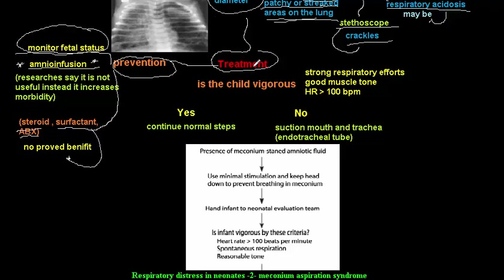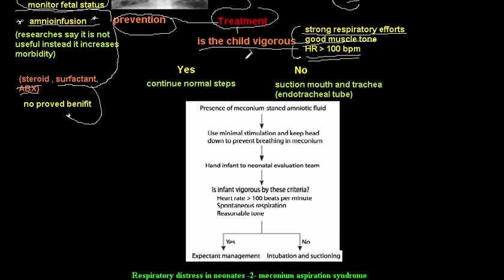For treatment, you must assess whether the infant is vigorous. A vigorous infant has strong respiratory efforts, good muscle tone, and a heart rate above 100 beats per minute. If vigorous, continue normal steps with monitoring. The latest guidelines no longer recommend routine suction from the mouth and nose if the infant is vigorous — just warm the baby and follow other resuscitation steps.